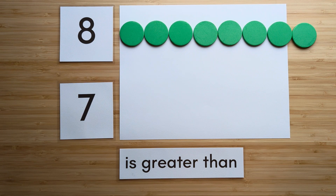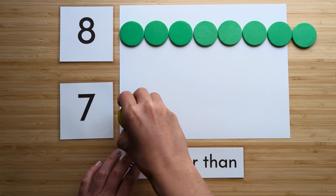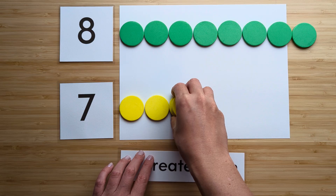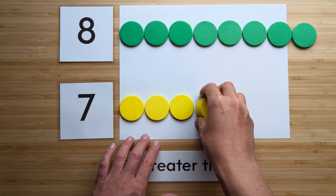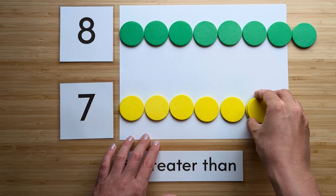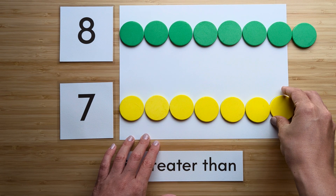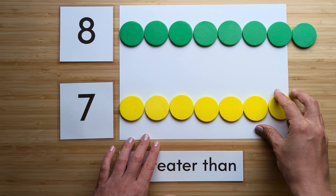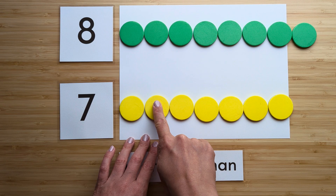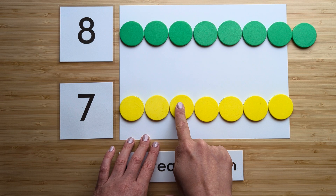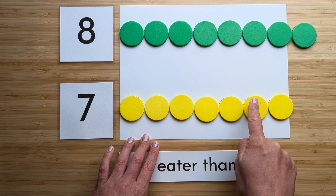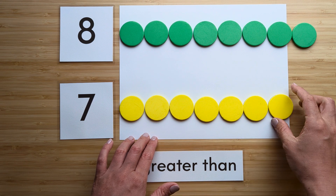Make the number seven. Point and count: one, two, three, four, five, six, seven.